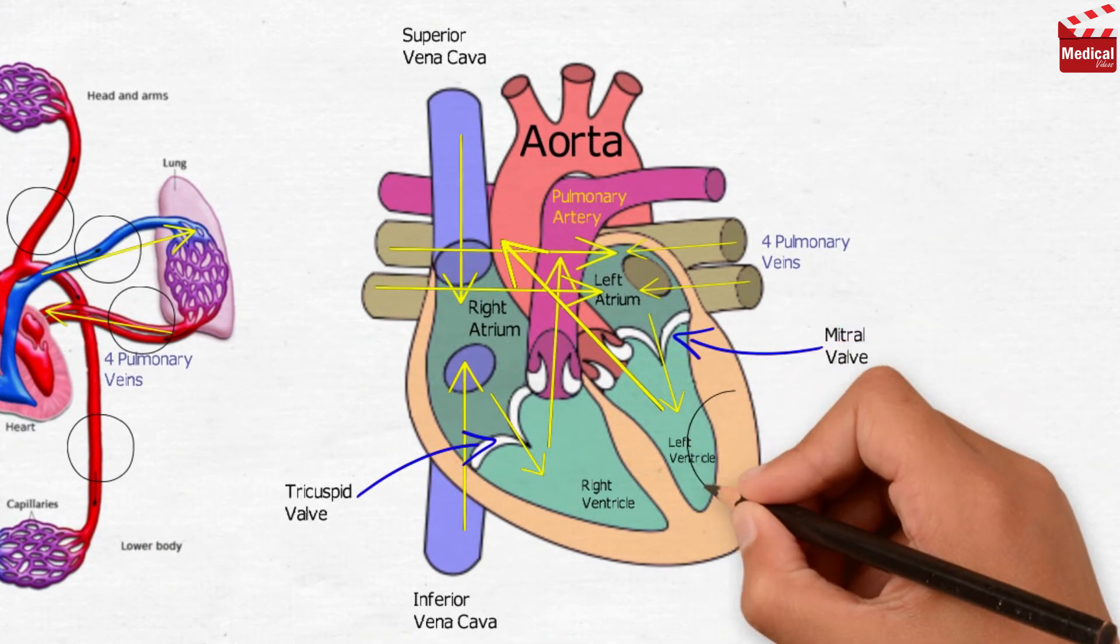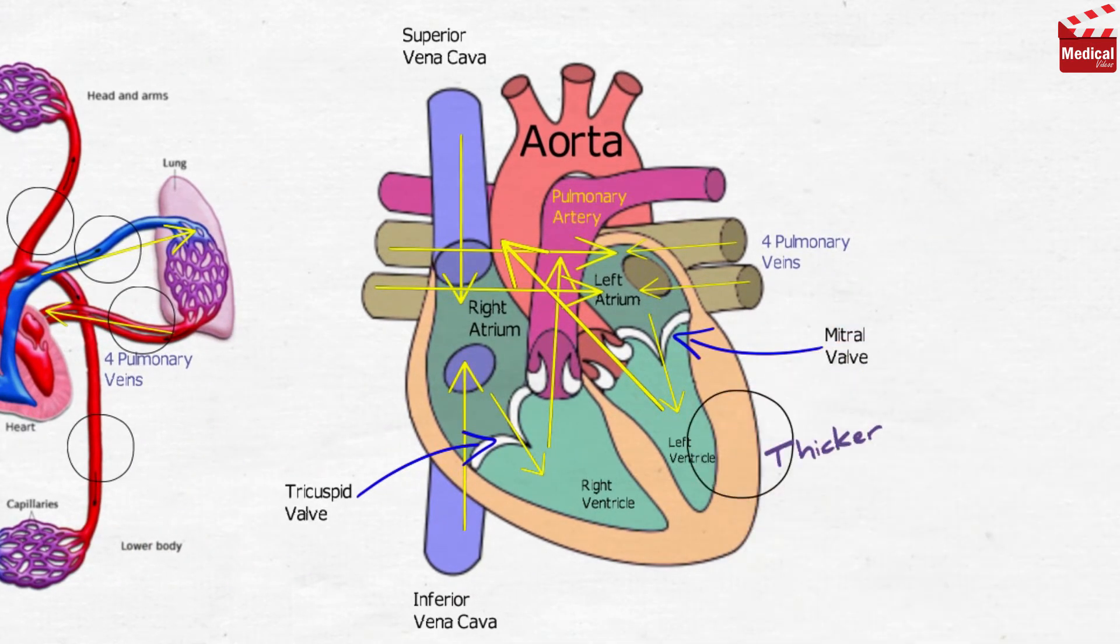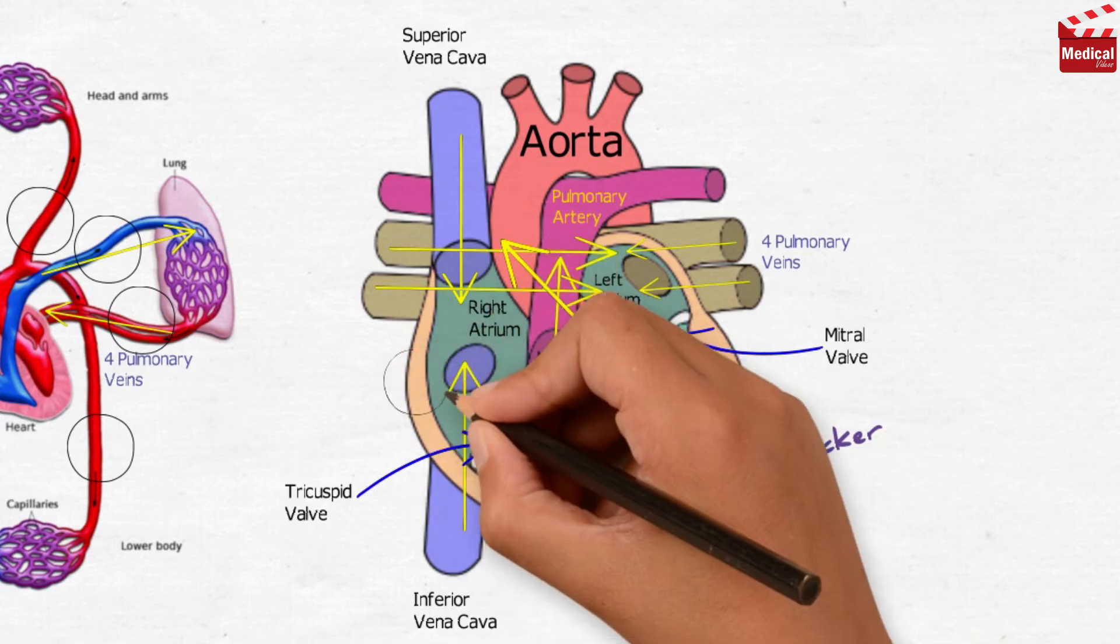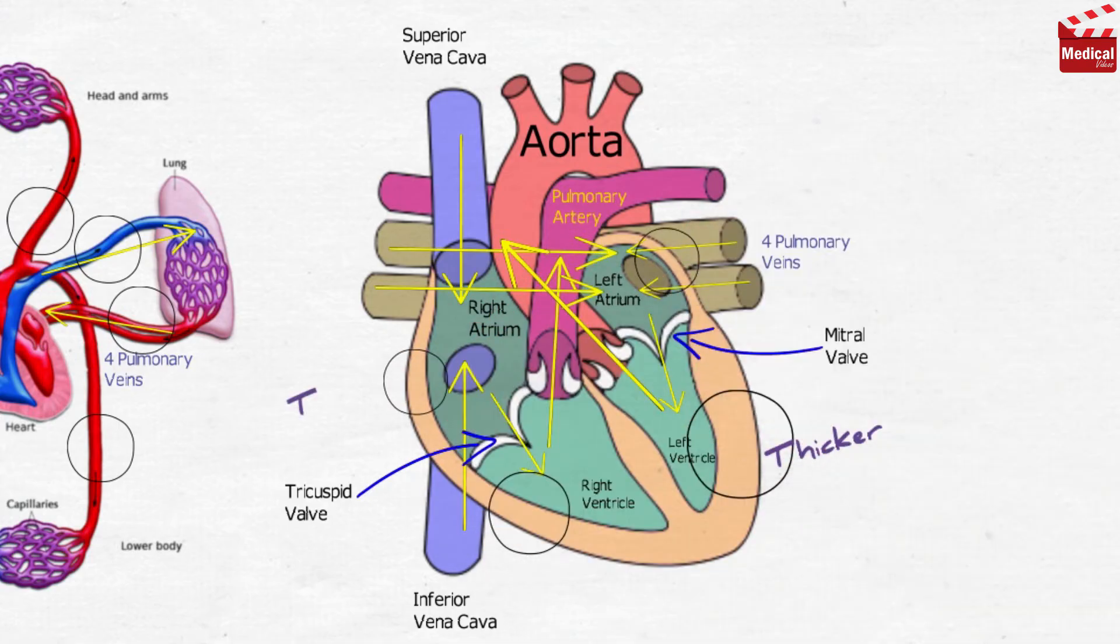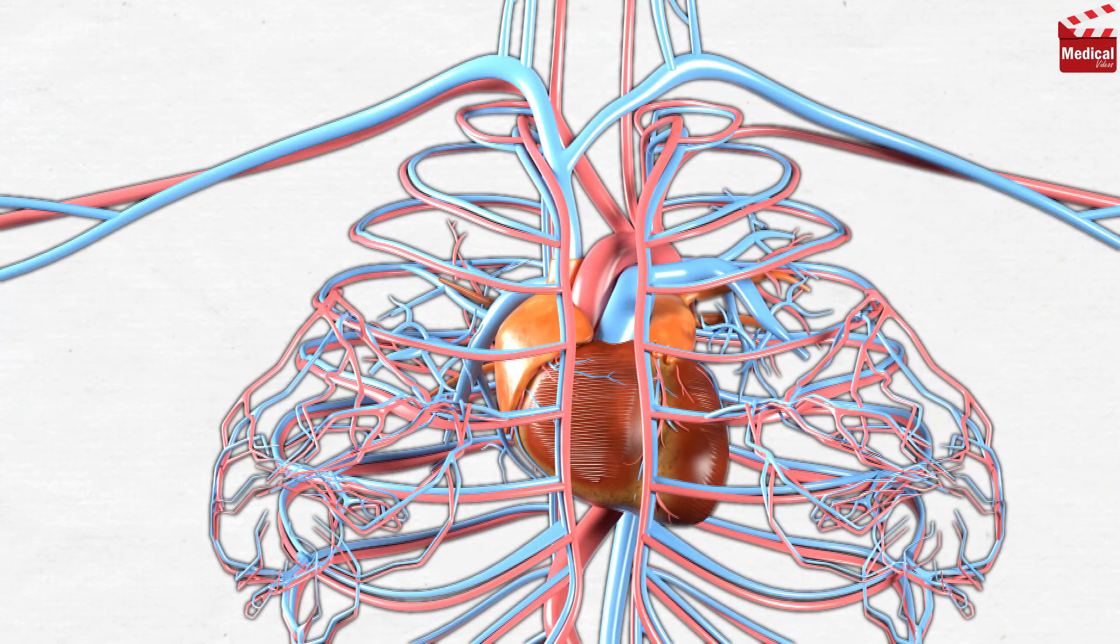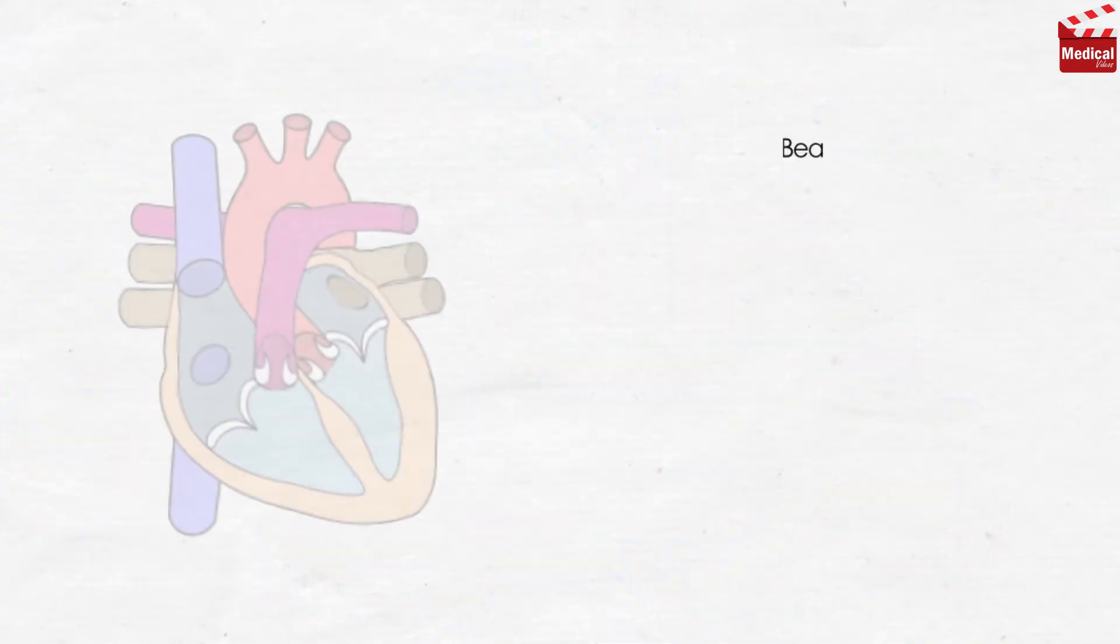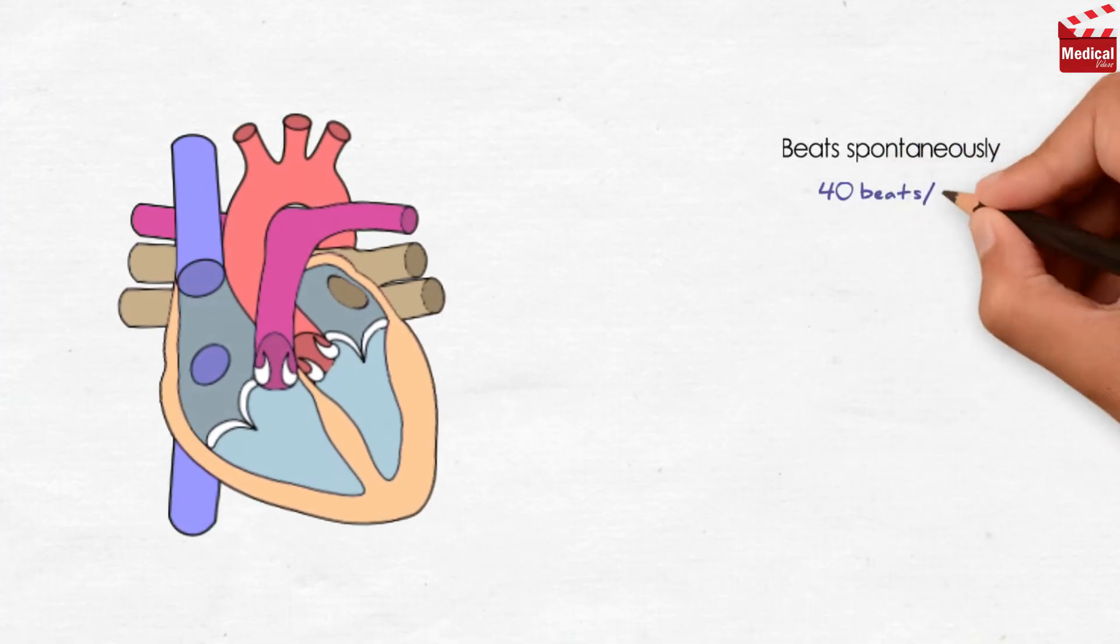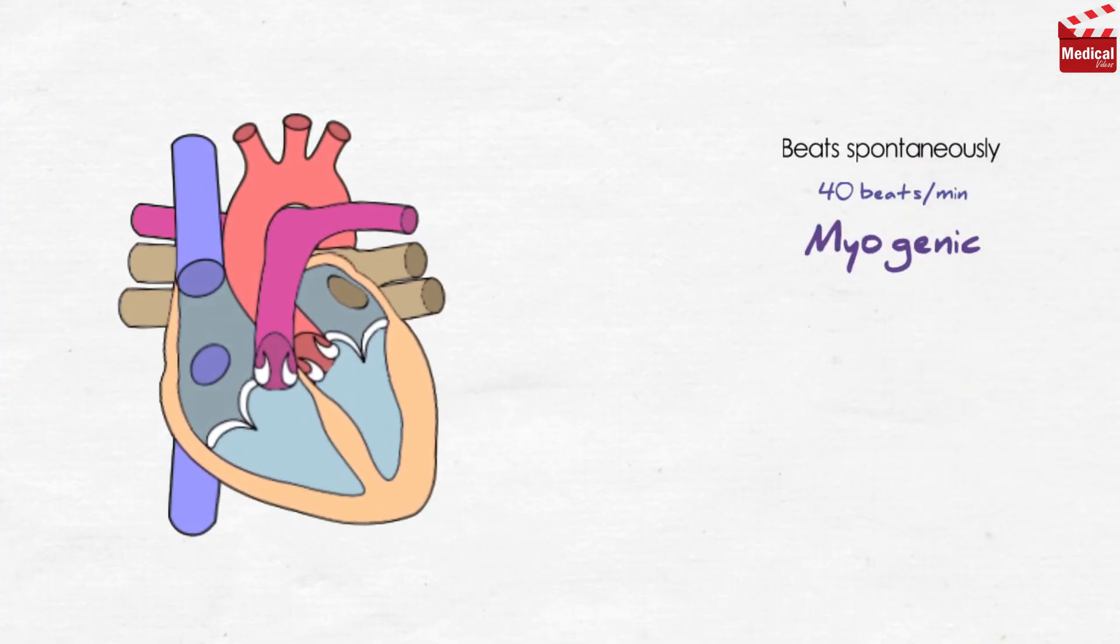We should also know that the wall of the left ventricle is thicker than the right ventricle, and the wall of atria is thinner than ventricles. The heart is supplied with blood through the coronary arteries that surround it. The heart can beat spontaneously at a rate of 40 beats per minute. Beating of the heart is myogenic in nature, not neurogenic.